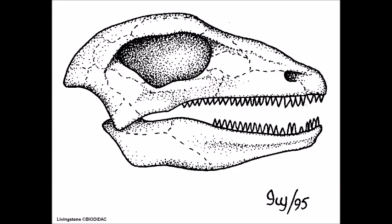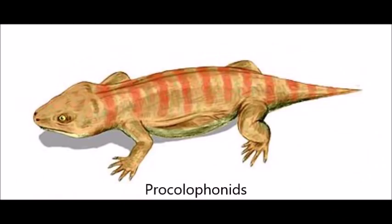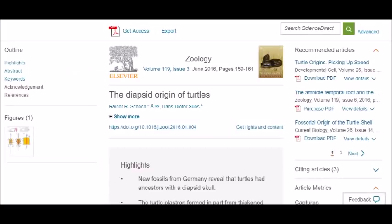Second, the anapsids, or parareptiles, are an extinct group of amniotes that existed from the late Carboniferous to the Triassic and are identified by having no holes in their skulls. Traditionally, turtles were classed among the anapsids, being either more closely related to pareiasaurs or procolophonids, but this conclusion has been upset by more recent molecular and fossil data.